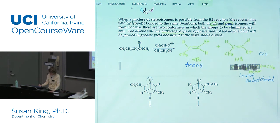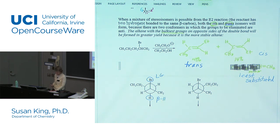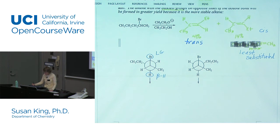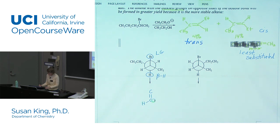So here's our leaving group, here's our beta hydrogen — leaving group on the front carbon, beta hydrogen on the back carbon the way I have it drawn. And if we eliminate the leaving group and the beta hydrogen, we get this alkene.